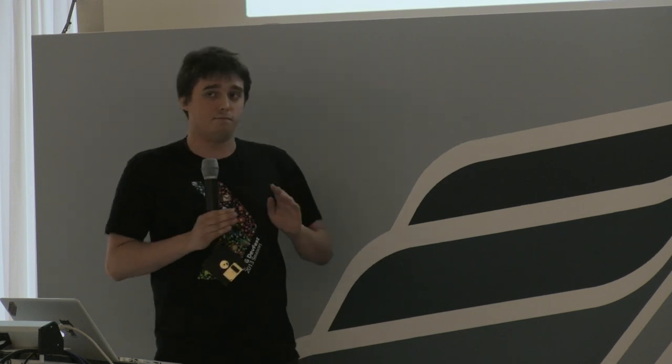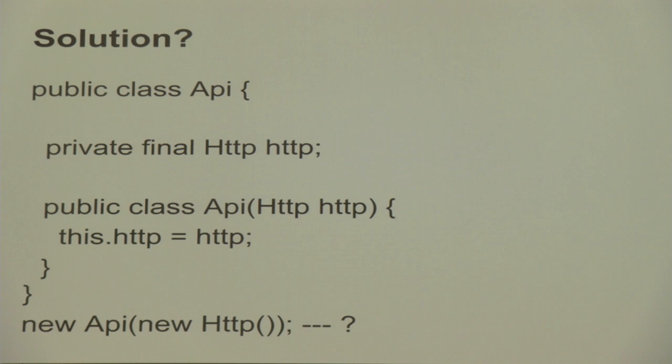Best case scenario, you get an IllegalStateException from the API method because you perform a null check. But if your component cannot run without another component, that dependency should be visible in the constructor, so everyone who reads your code instantly sees they need to supply the dependency directly to the constructor. So this approach looks better: we have a private final HTTP field put into the constructor.